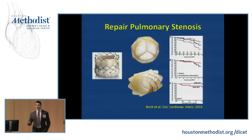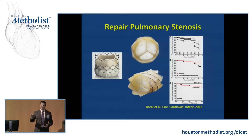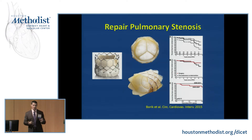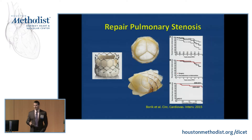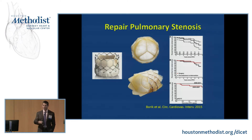Initially, the best repair is valvuloplasty — recommended across the board. However, if someone is not a candidate for valvuloplasty — for example, if they have a dysplastic pulmonary valve with abnormal leaflets and a small annulus — valvuloplasty does not work and you can do pulmonary valve replacement. Pulmonary valve replacement can be surgical or percutaneous depending on annulus size. Most adults we see have had prior surgical or balloon valvuloplasty as children and now present with pulmonary valve insufficiency.